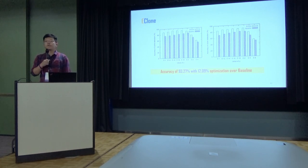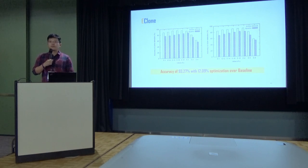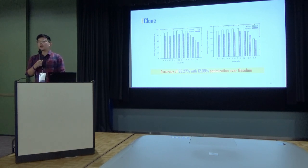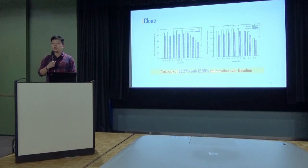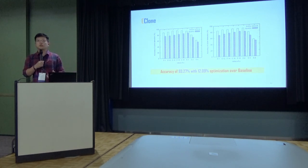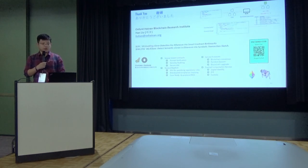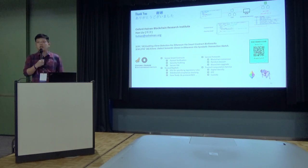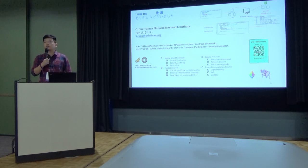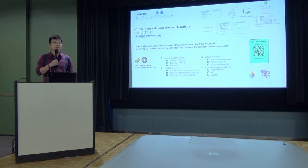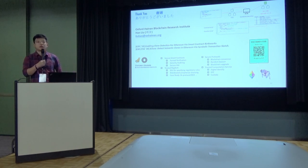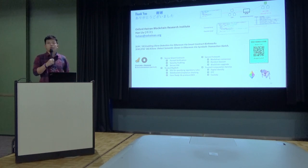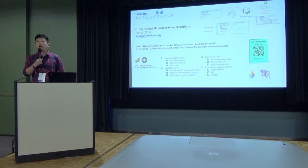We have done a preliminary evaluation, and it turns out the eClone tool can deliver better detection capability than the baseline approach, which only considers syntactic information in the contract. That will conclude my talk. If you have interest in more details, you can refer to these two academic papers. In addition to contract security, we also do a lot of other interesting things, including routing protocols and other secure protocols on blockchain. I'll be happy to have any offline discussions. Thank you.